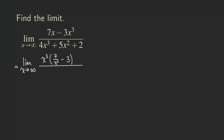Now we do the same thing for the denominator — factor out the highest power, which is also x cubed. Factoring out x cubed gives us 4, since 4 times x cubed gives back 4x cubed. Then we get plus 5 over x, and continuing to factor out x cubed from the constant 2 gives us 2 over x cubed.